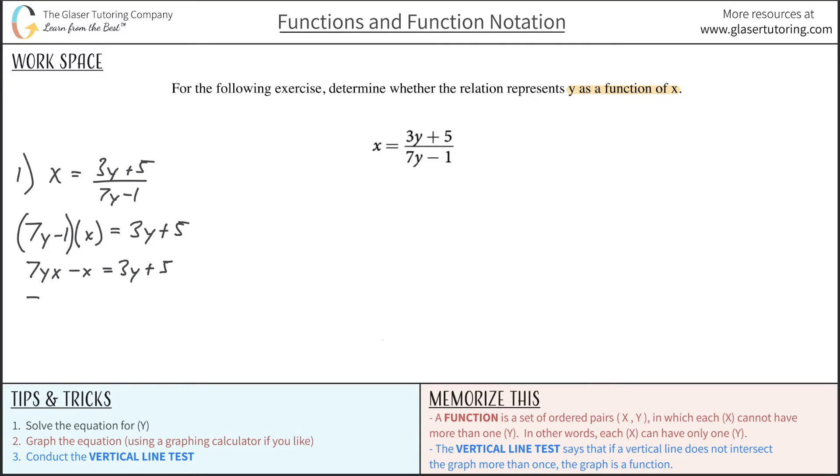So after I do that, we're going to have something that looks like this now. So 7yx minus 3y will then be equal to x plus 5. Now I realize that I have the same variable in both the first term and the second term. That means that I can factor out the common term of y from both terms.